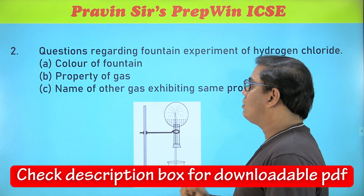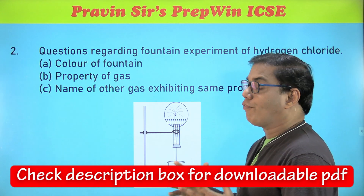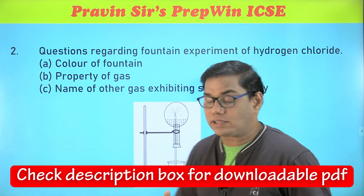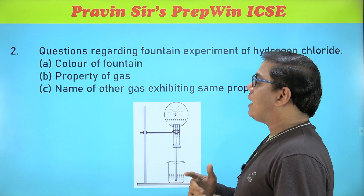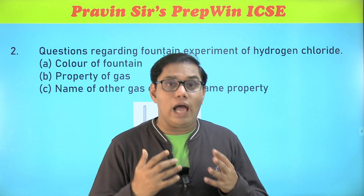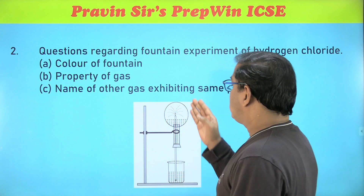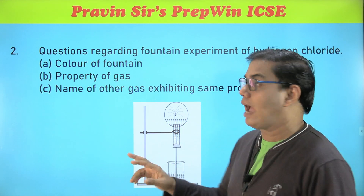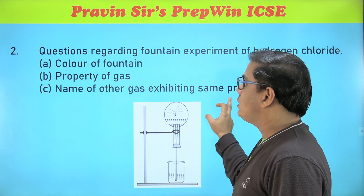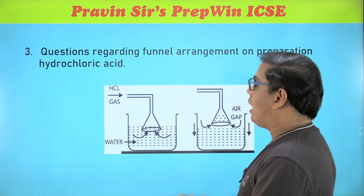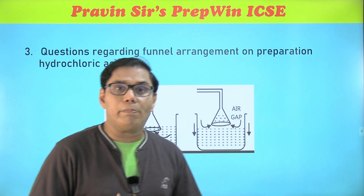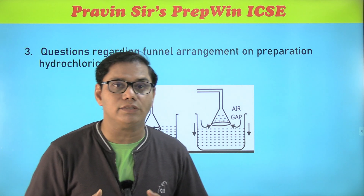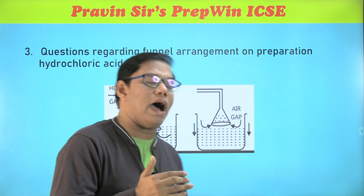What is the color of the fountain? What is the property of the gas? What conclusion do you derive about the property of the gas through this experiment? There is one more gas along with HCl which shows the same property — that gas is ammonia. Prediction number three is regarding the funnel arrangement while preparing hydrochloric acid; this funnel arrangement is used to prevent back suction.